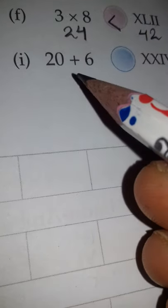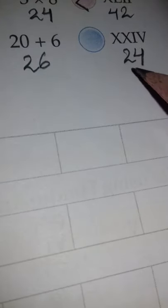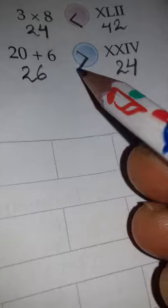The last one, part (i): 20 plus 6 - if we add 6 to 20 we will get 26. The other side is given as XXIV. XX means 20, IV means 4, so it comes to 24. Now one side is 26, the other side is 24, so which one is greater, 26 or 24? Very good, 26.